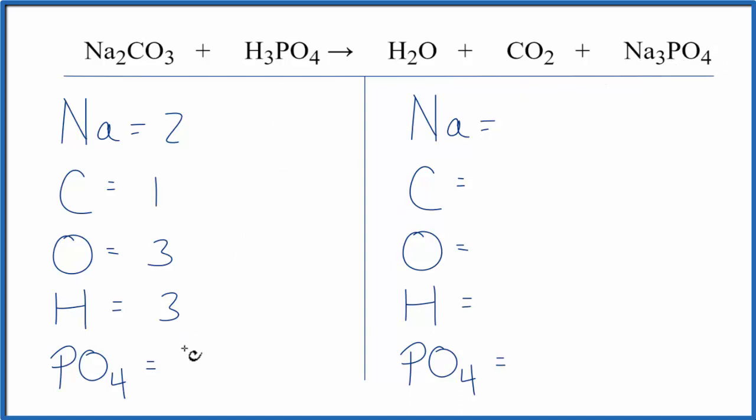On the product side, we have three Na's, one carbon, one oxygen, plus this other oxygen here, these other two. That gives us three, two hydrogens, and then one of the phosphate ions.